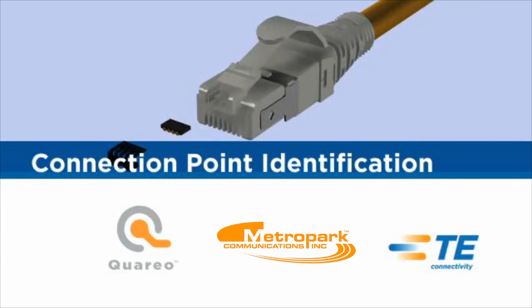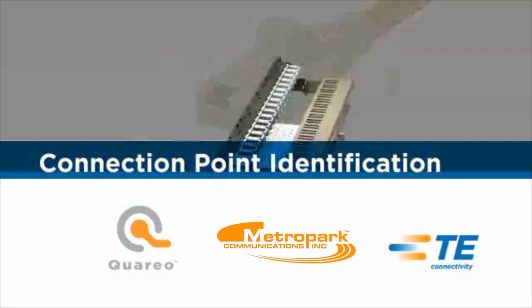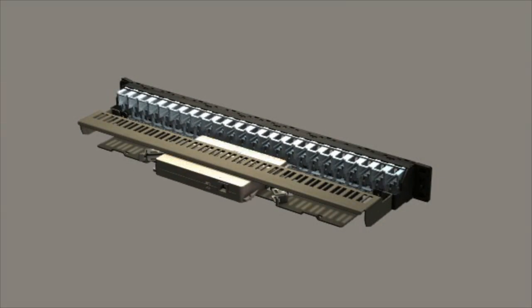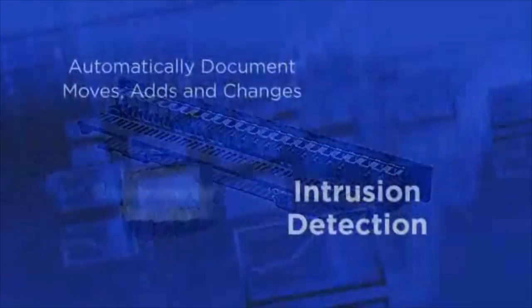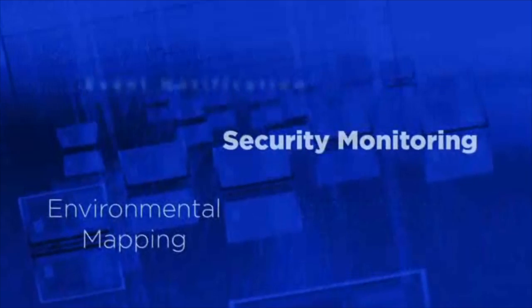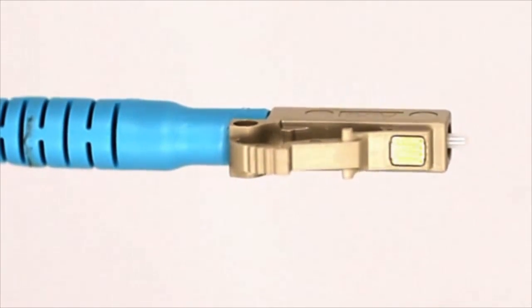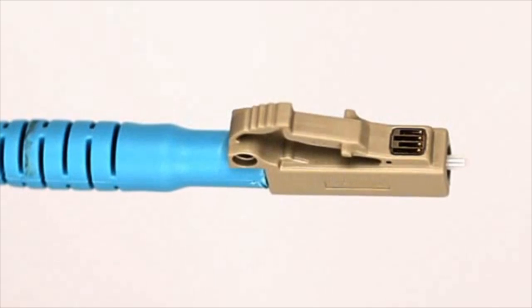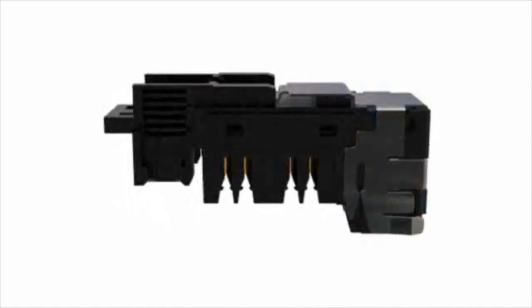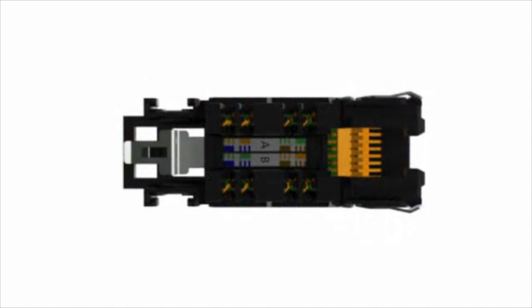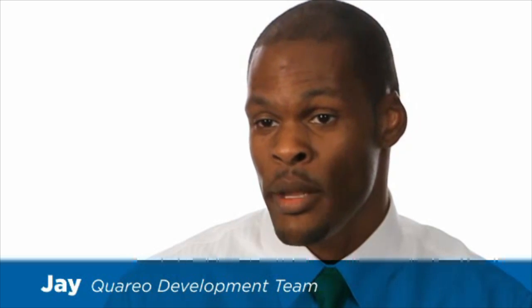Quario's unique Connection Point Identification, or CPID, enables an automatic, accurate, and real-time view of a network from the data center all the way to the desktop. CPID technology has an integrated circuit placed right on a standard form factor connector that allows for something very akin to a MAC-like ID to be placed on the A and A-prime ends of the cable, giving you full accountability of each connection point within the network.